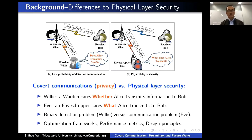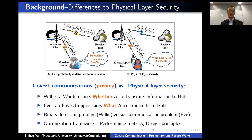I'll try to clarify some differences between covert communication — also known as low probability of detection communication — and physical layer security. Covert communication is mainly about privacy, while physical layer security is about security. The main difference is that in covert communication, the third party Willie tries to decide whether Alice is transmitting or not. But in physical layer security, the eavesdropper tries to decode or understand what Alice transmits. One is the transmission action, the other is the communication content. Due to this difference, the optimization frameworks, performance metrics, and design principles are very different in these two contexts.